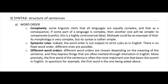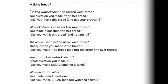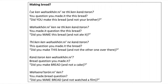Different word orders are chosen depending on the meaning of the sentence — they express things that in English are conveyed through intonation. The first word of the sentence is often the most important, bearing the accent. In questions, for example, the first word is the thing being asked about. In Mohawk, there would be five ways of asking whether you made this bread, each foregrounding a different element: who made it, what was done with it, which bread, etc.